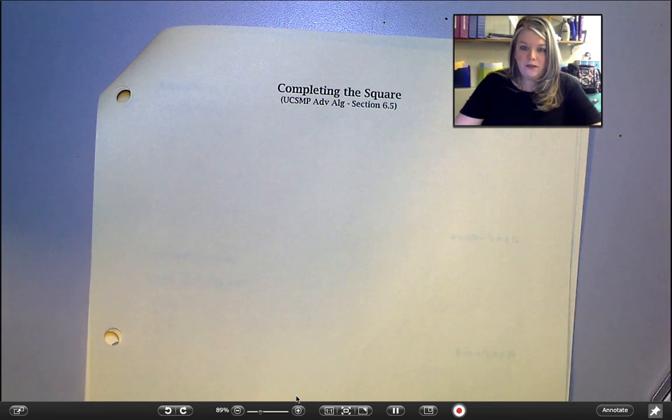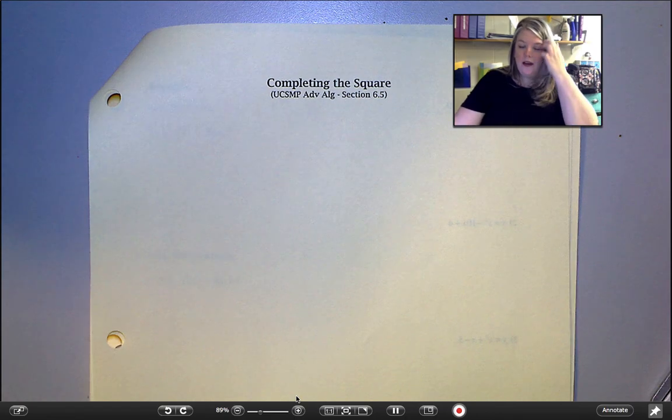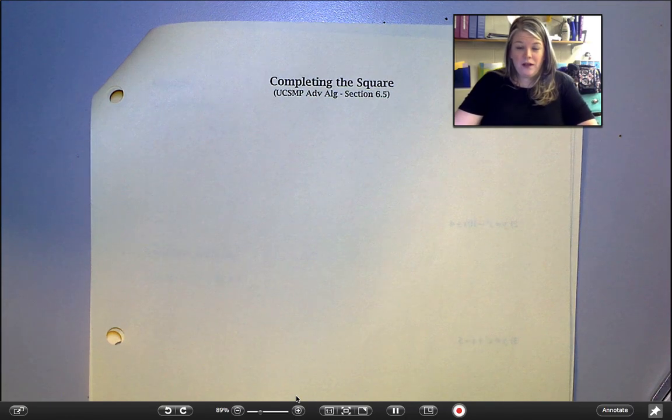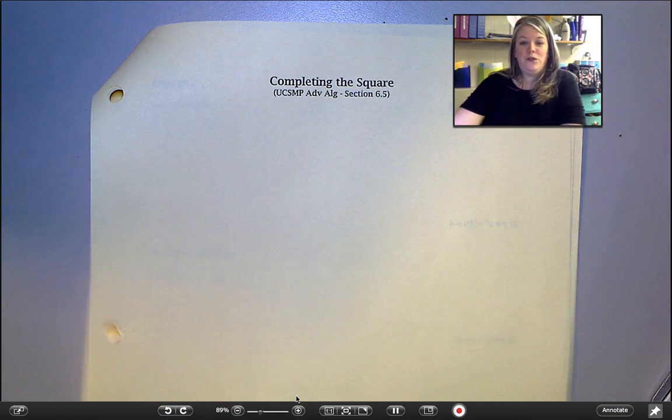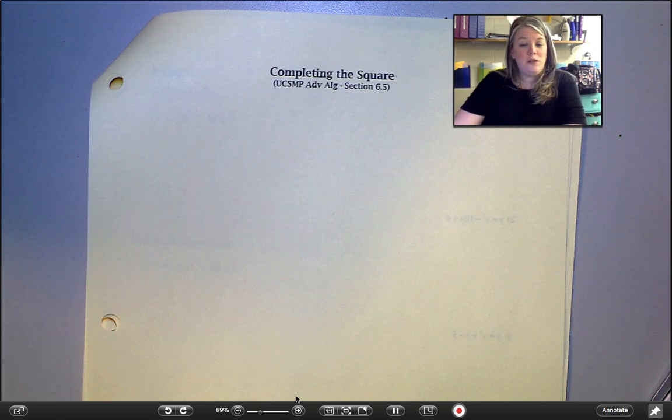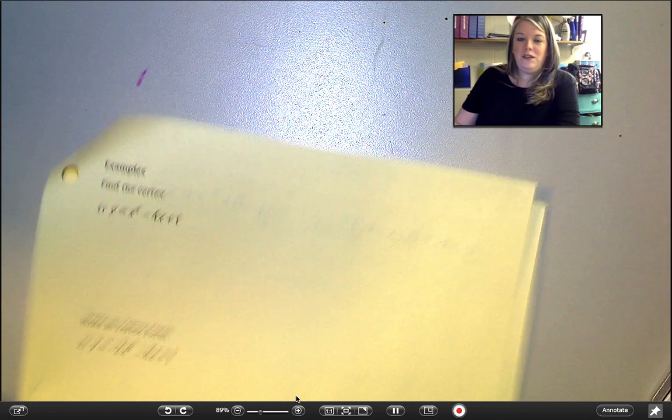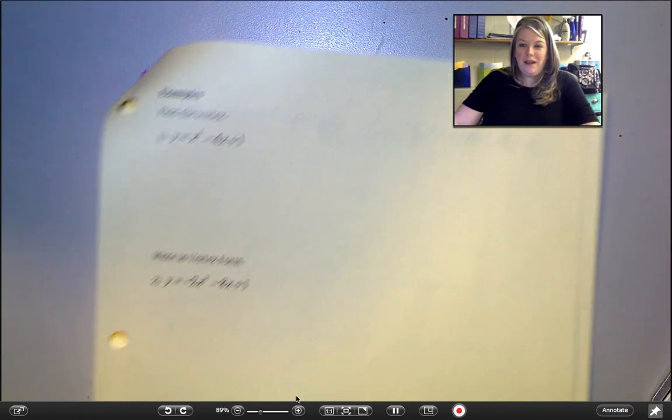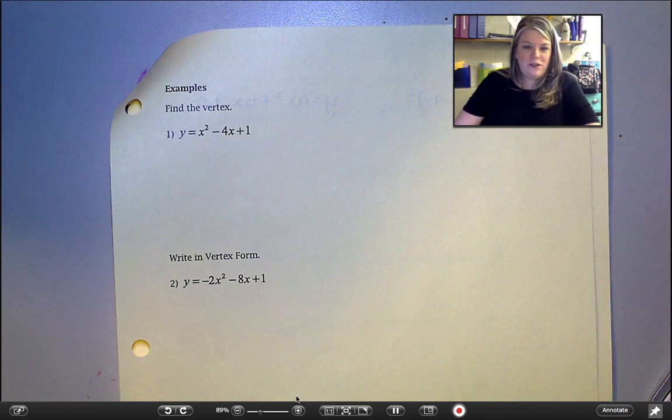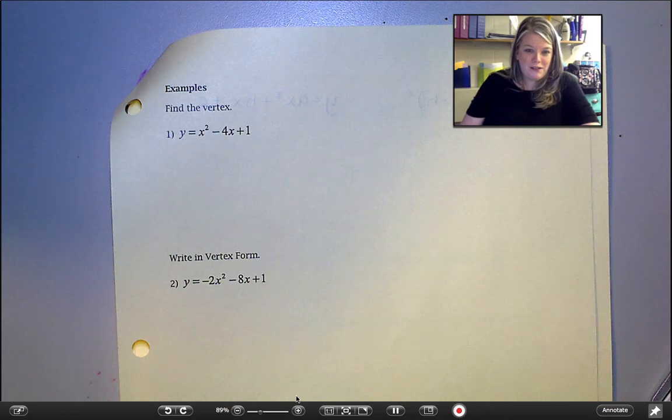And you're actually going to be jumping over a couple of pages in your notes. So there's a page that says completing the square. We're actually going to do this lesson in class on Friday. This is another way of getting back from standard form to vertex form. But I want to make sure we talk about this one in class because there's a lot of discussion that goes into this one. So you're actually going to skip past this page and go to this page here where it just says examples. I think I accidentally left off the front page of this, but that's okay.